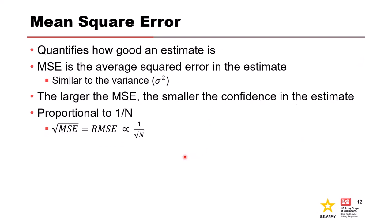The mean square error quantifies how good an estimate is — it's the average squared error in the estimate, similar to variance. The larger the MSE, the smaller the confidence we have in that estimate. It's proportional to 1 over N, so we have more confidence with a longer period of record.